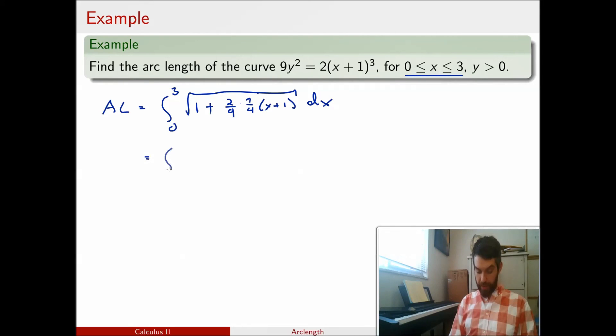And maybe I'll just clean it up. Integral from 0 to 3 square root of the 9's are going to cancel, so 1 + (x + 1)/2 dx. At this point, it's just an integral, and so it's just a question of evaluating this integral.